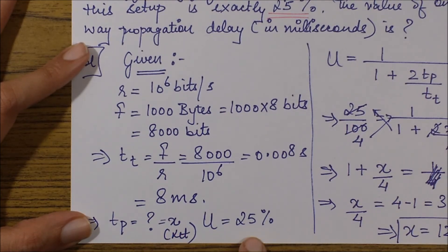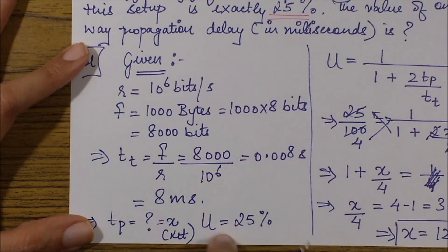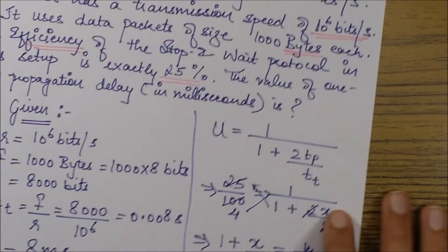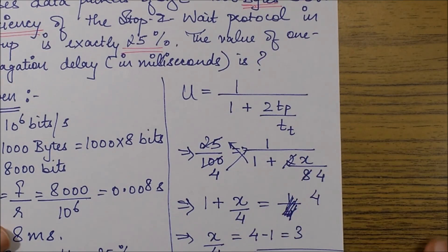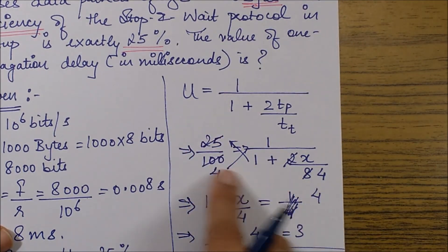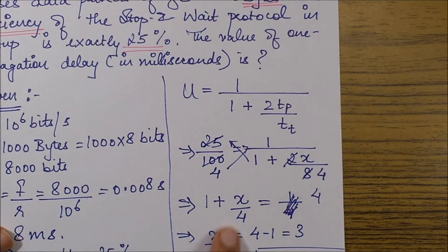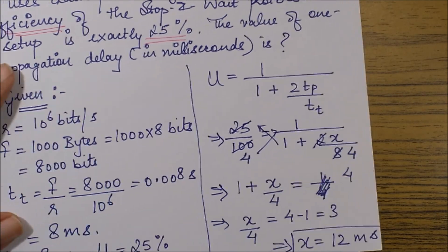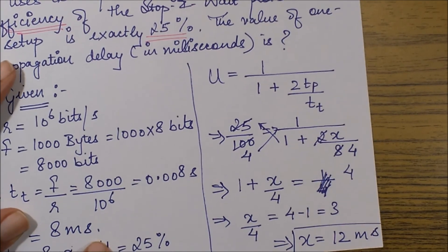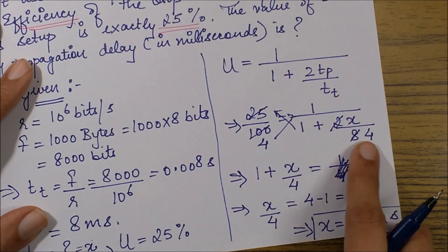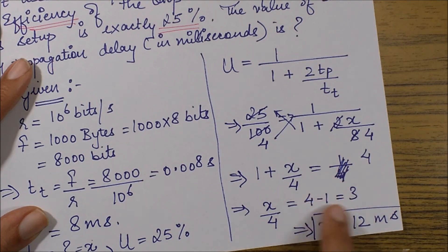I need tp which is required in the question, and I have utilization as 25 percent. Now I'll put both these values in my utilization formula. I write down the values and simplify, and what I get is 12. Since I took 8 in milliseconds, my answer which came as 12 is also in milliseconds, which is what we required.